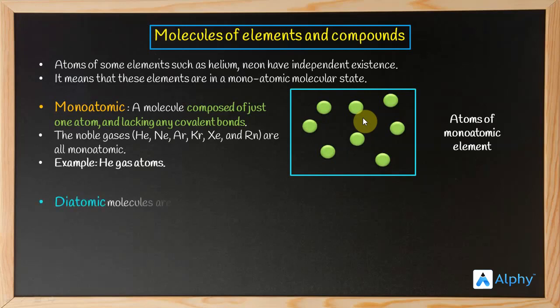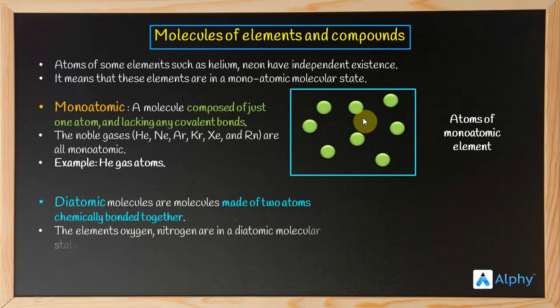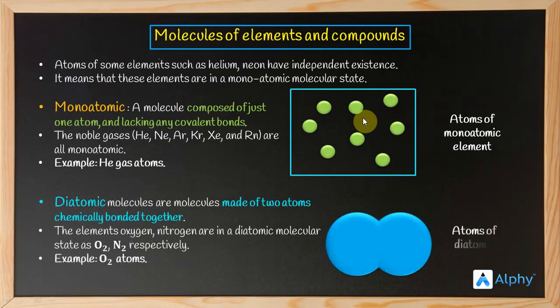Next I have diatomic molecules. Diatomic molecules are molecules made of two atoms chemically bonded together. The elements oxygen and nitrogen are in diatomic molecular state as O2 and N2 respectively. Example: O2 atoms. Atoms of diatomic element.